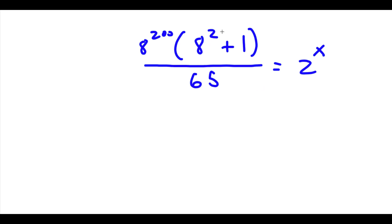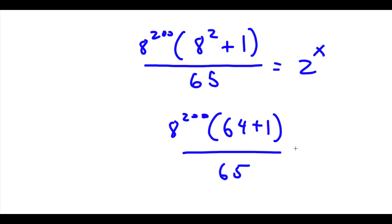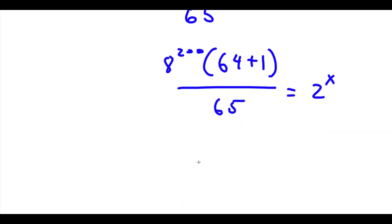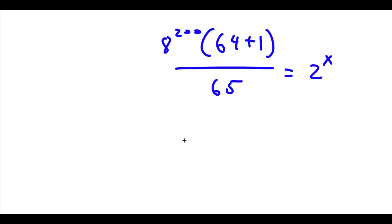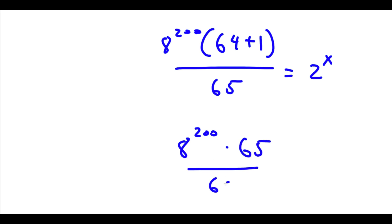Now, 8 to the power of 2 is equal to 64. So now I have 8 to the power of 200 times 64 plus 1 over 65 is equal to 2 to the power of x. 64 plus 1 is 65, so I have 8 to the power of 200 times 65 over 65 is equal to 2 to the power of x.